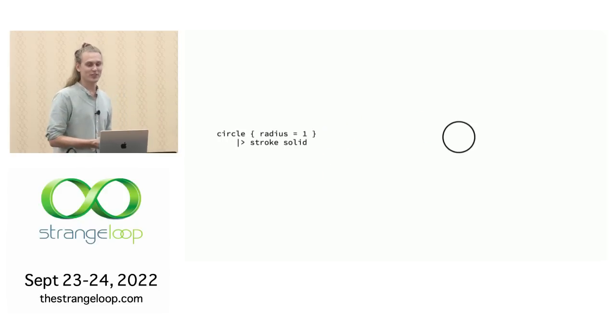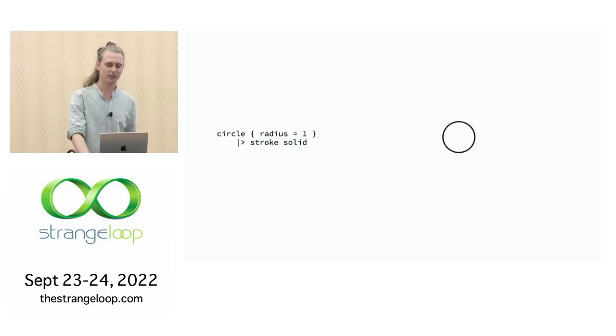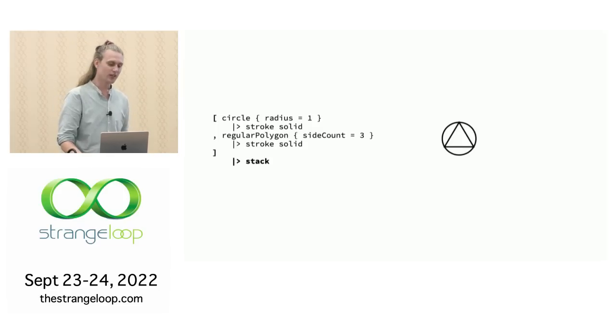So let's start with the simplest, most basic shape. It's a circle, radius one with a solid stroke. Nothing complicated. Let's add another shape, a triangle. It's a regular polygon with side count three, so we get an equilateral triangle, also with a solid stroke. And then we're putting both of them in a list and stacking them on top of each other so that we get the triangle on top of the circle.